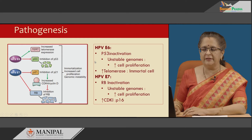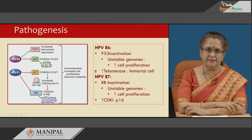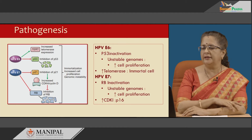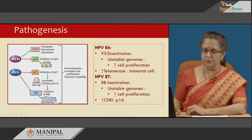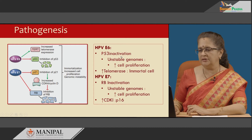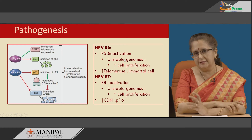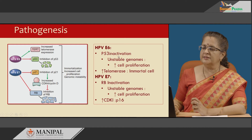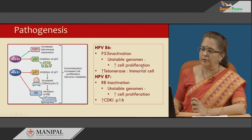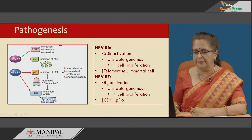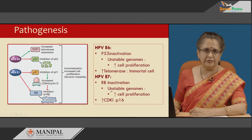Pathogenesis is related to HPV E6 and HPV E7 in HPV-related tumors. E6 causes p53 inactivation — p53 is the apoptotic gene involved in removal of cells with abnormal DNA. With p53 inactivated, the genome becomes unstable, leading to increased cell proliferation. E6 also increases telomerase, making the cell immortal. HPV E7 causes inactivation of another tumor suppressor gene, the RB gene, also resulting in increased cell proliferation due to an unstable genome.